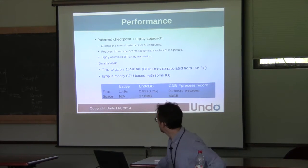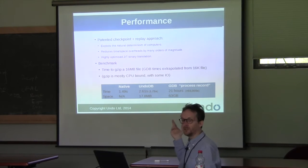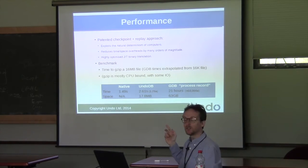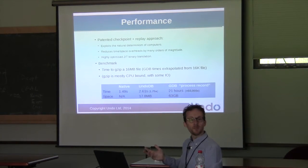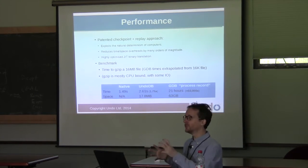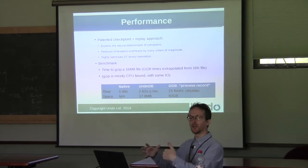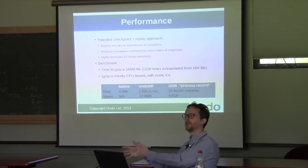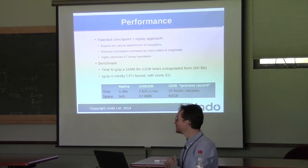You might notice that the file we're GZipping in this example is 16 megabytes long. The memory overhead of UndoDB is just a bit more than 16 megabytes, and that's not a coincidence. Effectively, we've had to store the data the program read from the file — there's 16 megabytes of it, plus a few other things.